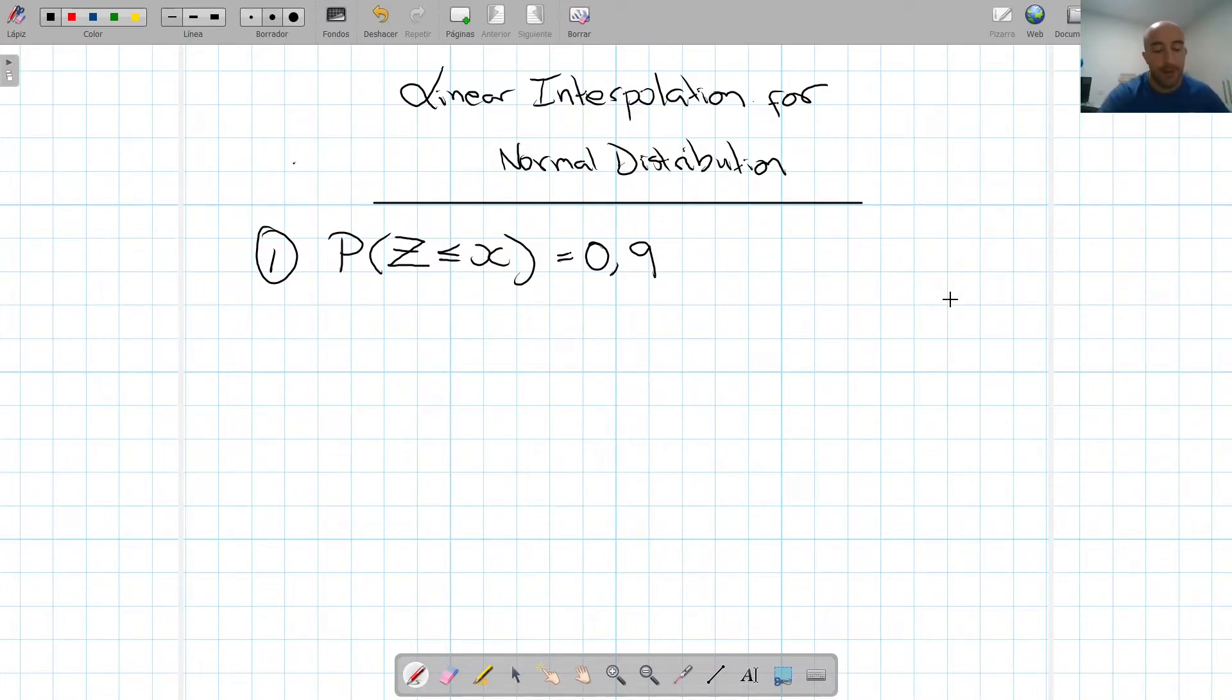So imagine, let's look at two cases. Imagine in the first case we're looking at, we know that the probability that our variable is less or equal to a value equals 0.9.